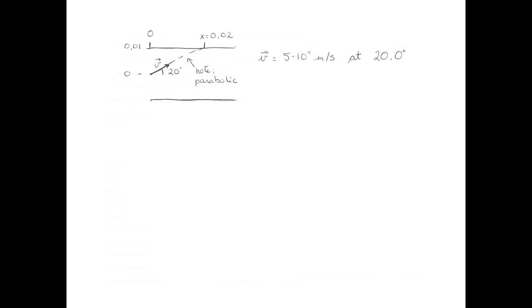The next thing I want to do is split up that velocity vector into its x and its y components. The x component is going to be 5 times 10 to the 7 cos 20, and the y component is going to be 5 times 10 to the 7 sin 20, giving us 4.69 times 10 to the 7 i-hat plus 1.71 times 10 to the 7 j-hat meters per second.